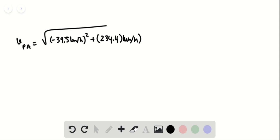The magnitude of VPA is the square root of negative 39.5 squared plus 234.4 squared kilometers per hour. The magnitude is found to be 237.7 kilometers per hour.